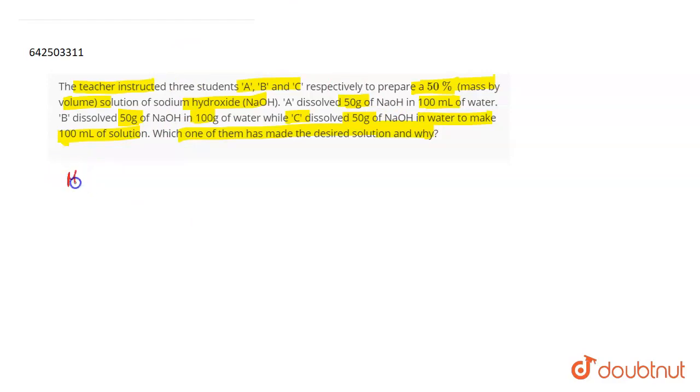The first thing you should know here is what is mass by volume percentage. Mass by volume percentage is actually the mass of solute divided by the volume of solution in ml times 100. This gives us the mass by volume percentage. You have to take the volume of the solution and not the solvent in the denominator.